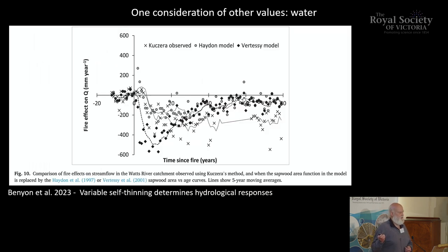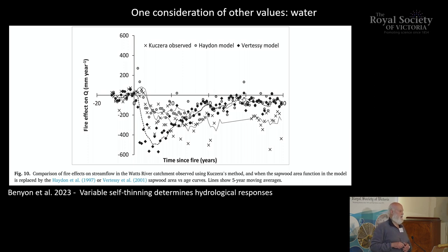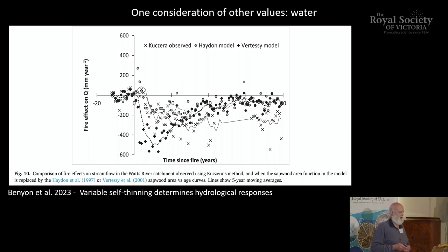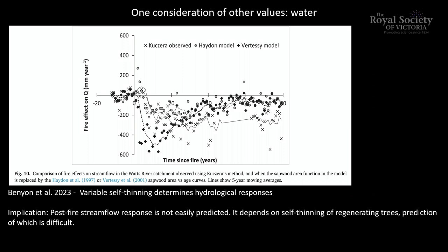Just a few comments about water as another value. Basically, if you look at what's been happening following a fire, there's this initial increase followed by a decrease. Those crosses in the figure represent actual measured values, and people have tried to model this by putting lines to it — different authors have tried. But basically the crosses are all over the place — it's not easy to predict.